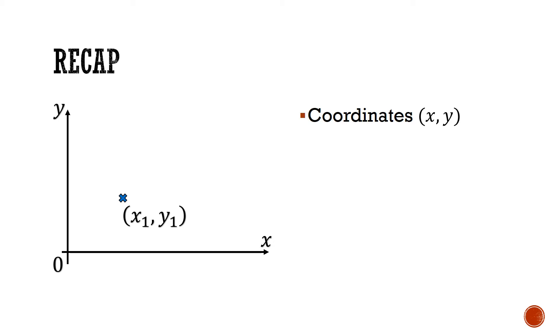We have also learned that for any straight line on the Cartesian plane, we are able to find the steepness of the line, which is also known as the gradient. This is found by finding the ratio of the rise against the run, and this is also computed by the formula y2 minus y1 over x2 minus x1.